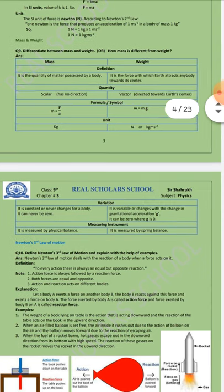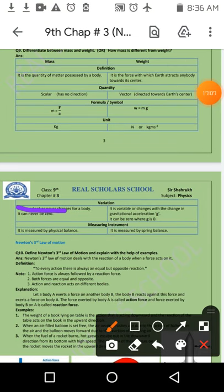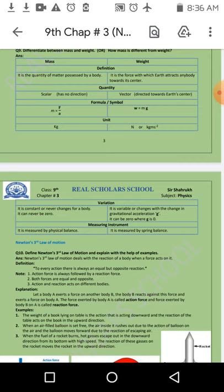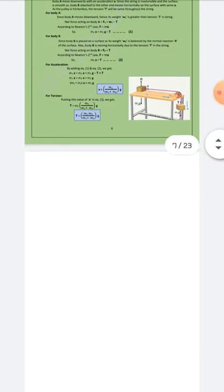Variation کا difference: Mass constant property ہے — یہ کبھی change نہیں ہوتی۔ Weight change ہو سکتا ہے — جیسے جیسے آپ earth کی surface سے دور جاتے ہیں، gravity کم ہوتی ہے اور weight بھی کم ہوتا جاتا ہے۔ Infinity پر weight zero بھی ہو سکتا ہے، لیکن mass کبھی zero نہیں ہوگا۔ Measurement: mass کو physical balance سے، weight کو spring balance سے measure کرتے ہیں۔